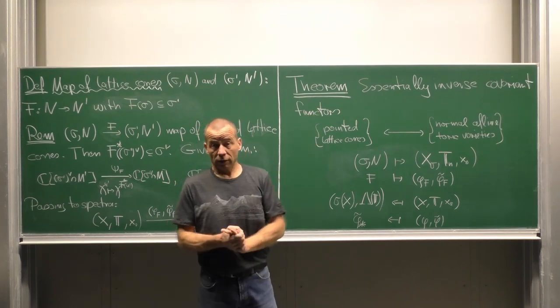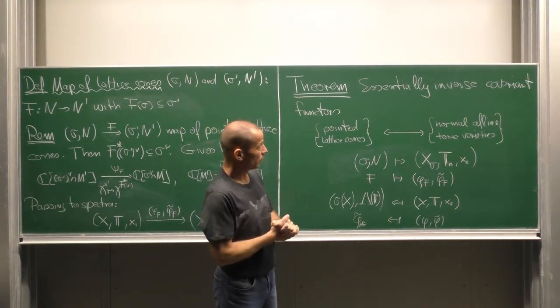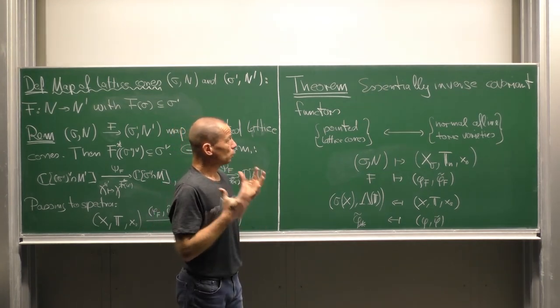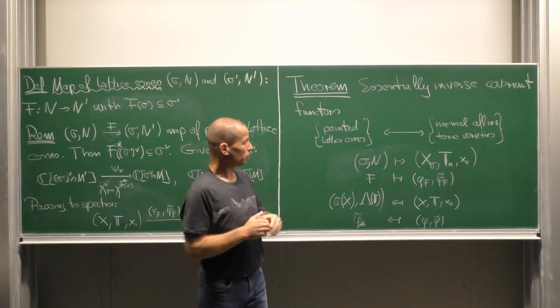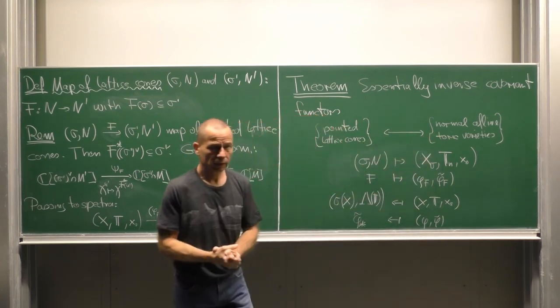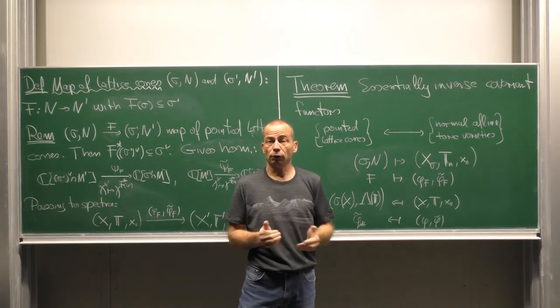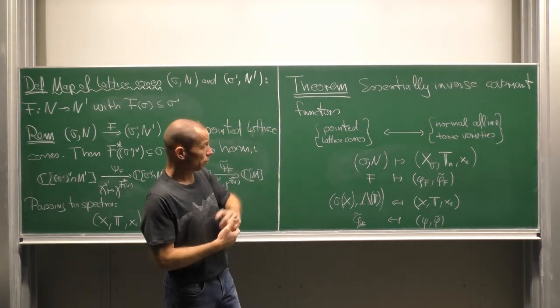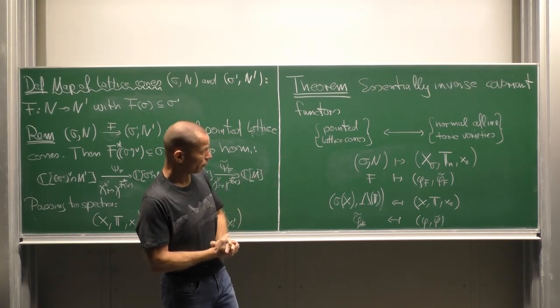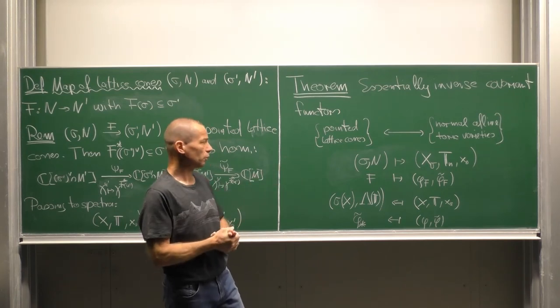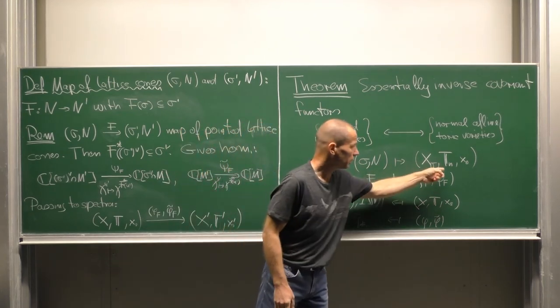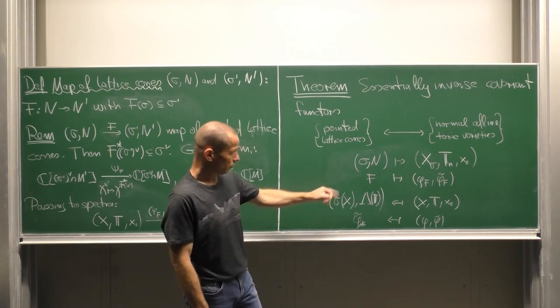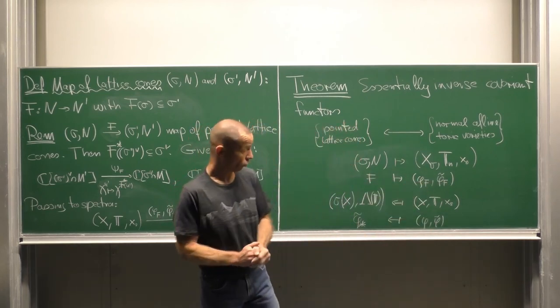Here is a final theorem summarizing everything. In total, we obtain two covariant functors from the one world into the other and back being essentially inverse to each other. From the pointed lattice cones, to the normal affine toric varieties, we just perform our constructions. Sigma N goes to X, T, N, x_0, and f goes to the toric morphism just constructed.